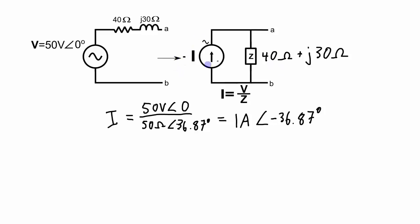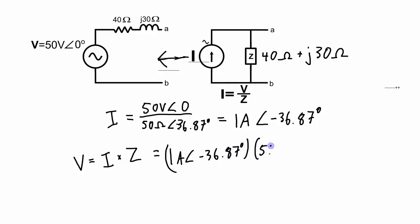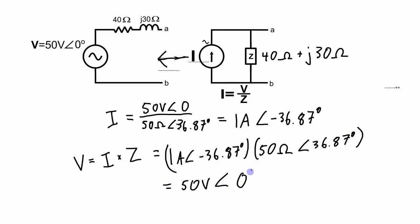Going back the other way — given the current source and wanting to return to the voltage source representation — I'll use the same numbers. I have a current source of 1 amp at −36.87 degrees in parallel with the 40 + j30 ohm impedance. The voltage equals the current times the total impedance: 1 amp at −36.87 degrees times 50 ohms at 36.87 degrees, which gives 50 volts at 0 degrees.